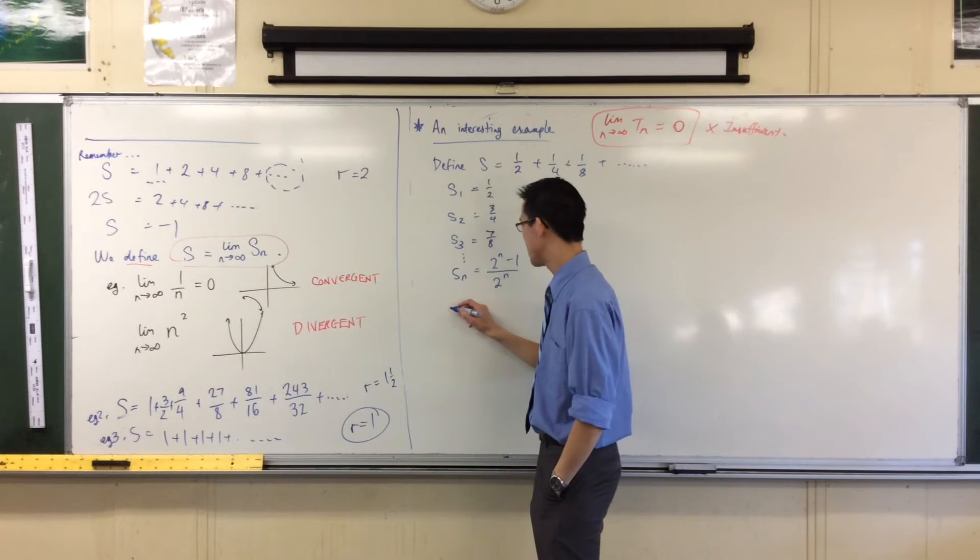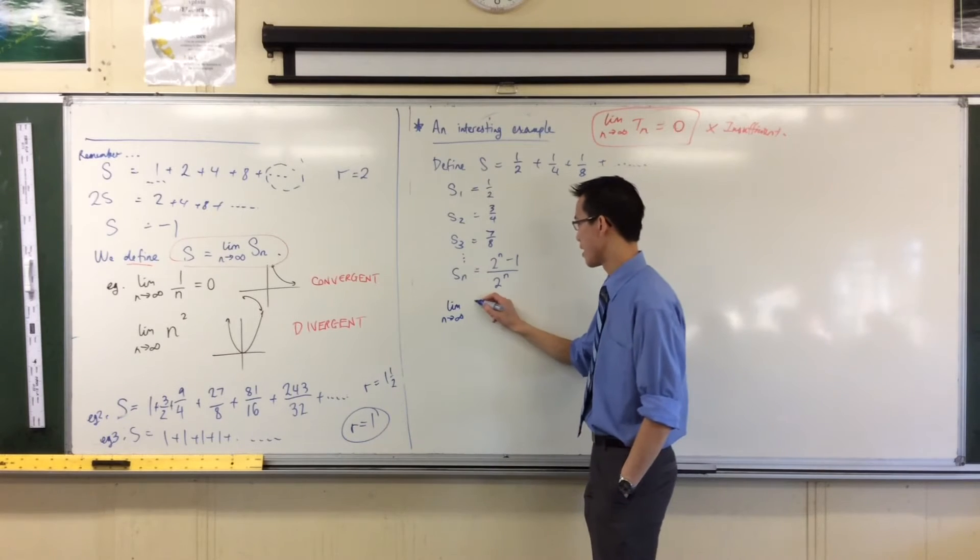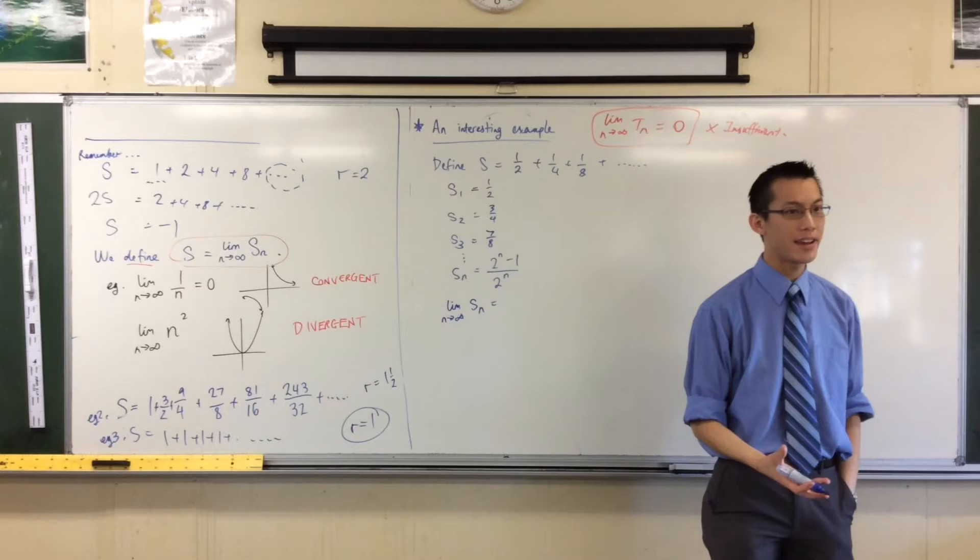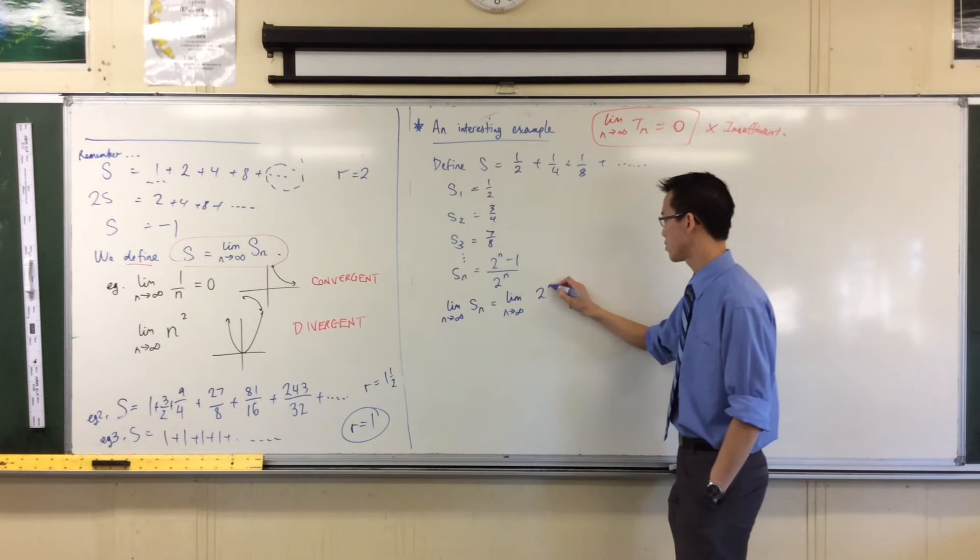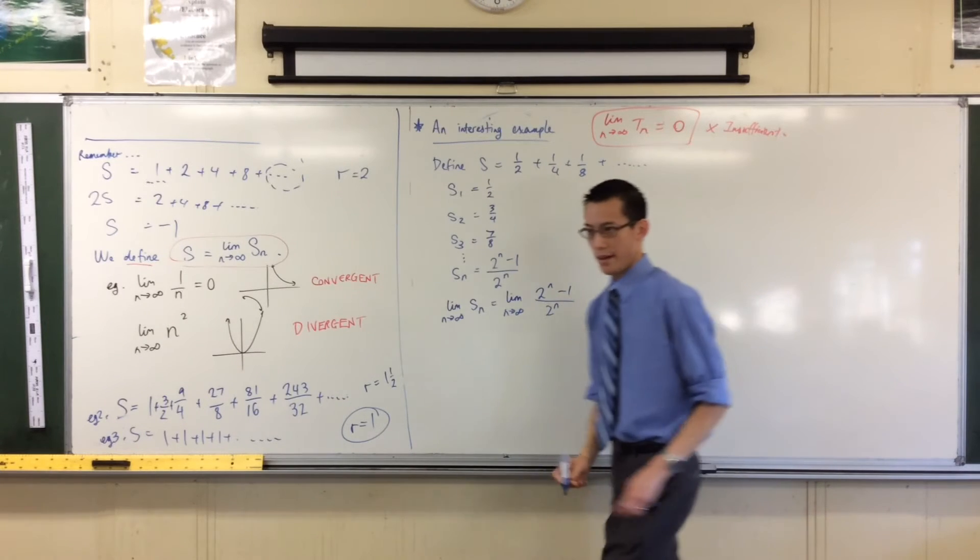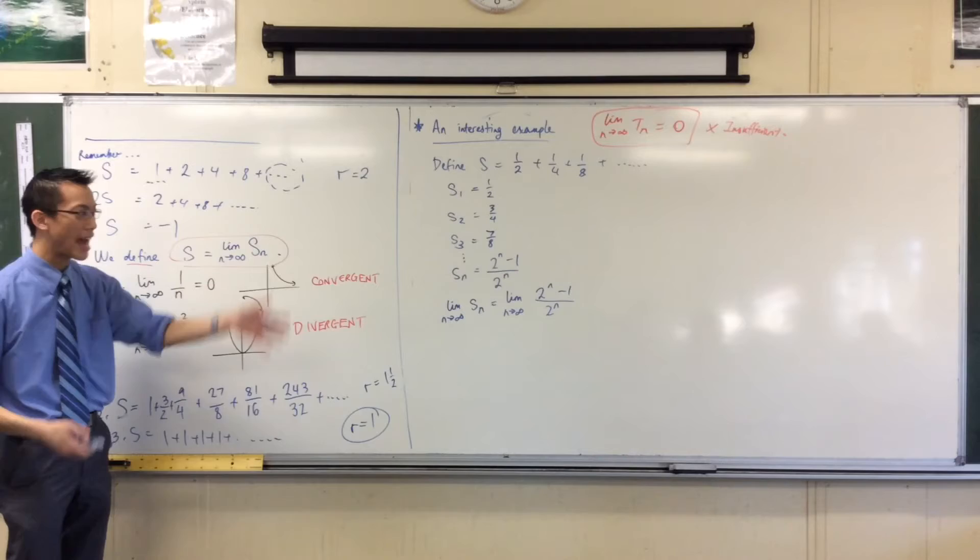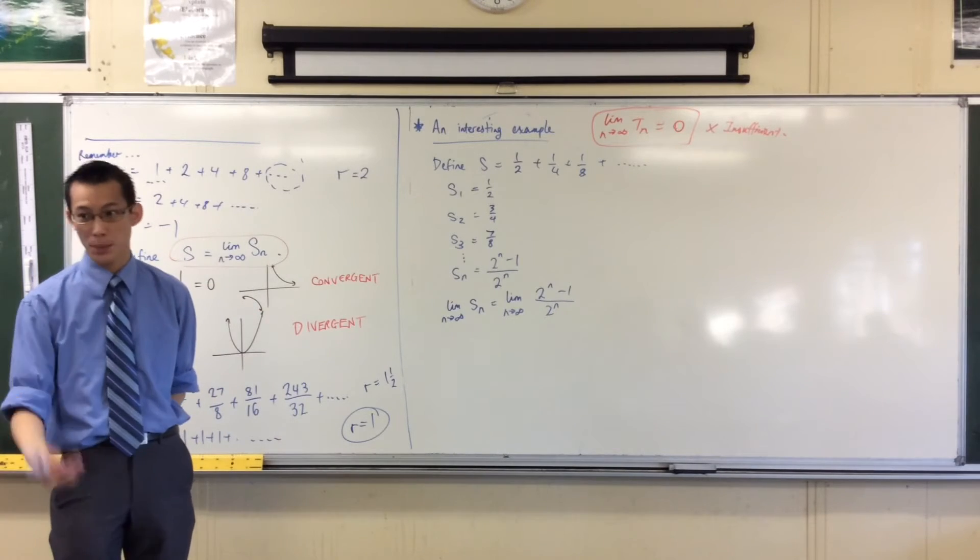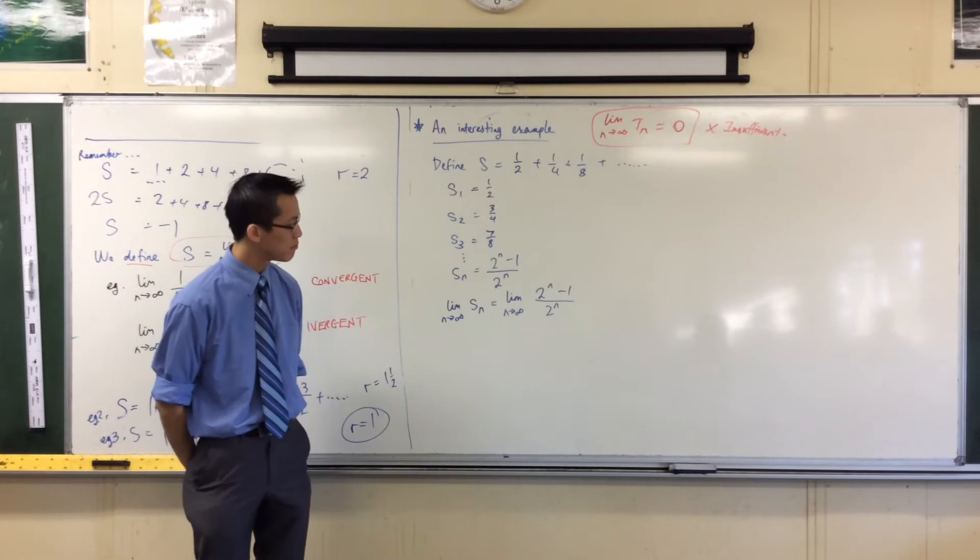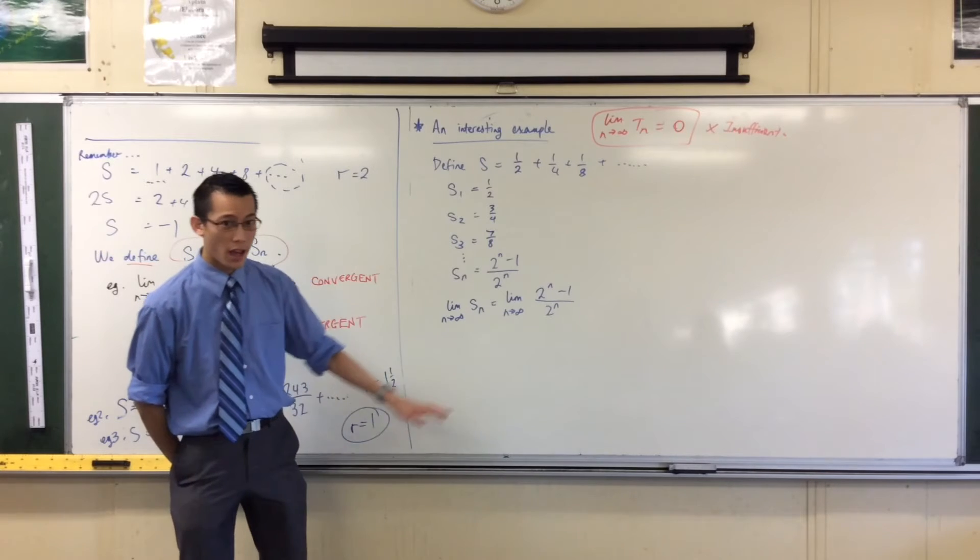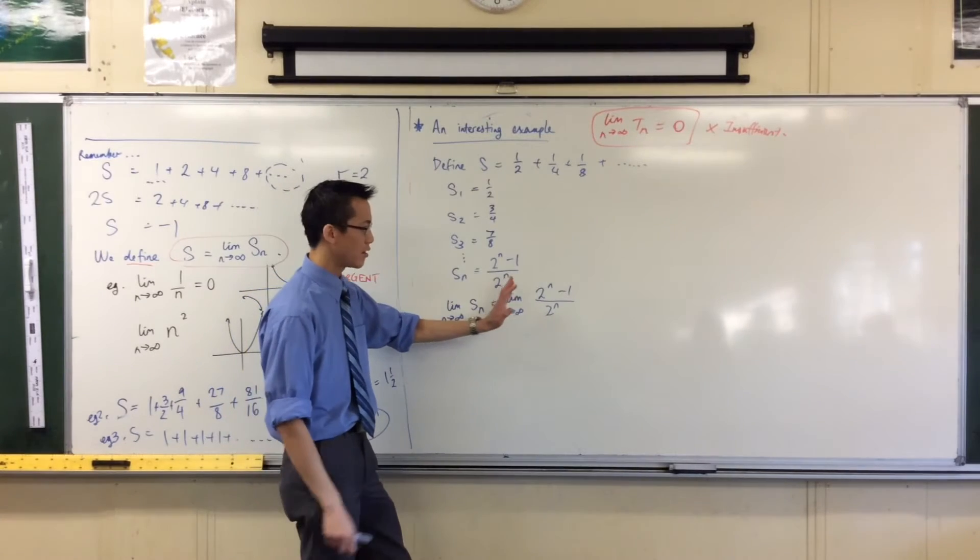S is equal to the limit as n approaches infinity of this thing, right, S_n. So if I take the limit of the left hand side, I better take the limit of the right hand side. Limit as n approaches infinity of this thing, two to the n minus one over two to the n. Okay now, just get your head back in limit land, right, for a second. At the moment, I cannot just simply evaluate this limit. Just like with first principles, you can't just put in h equals zero. Why can't I do that? At least not yet. Because two to the power of infinity is just still infinity. Yeah, this thing's going to blow up, and this thing's going to blow up, okay?